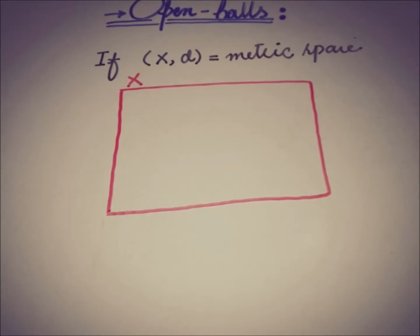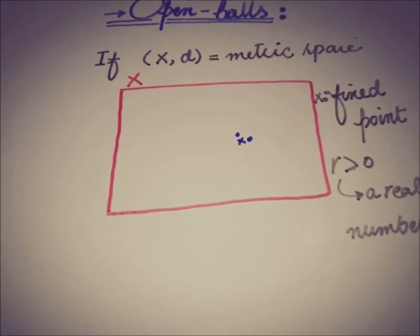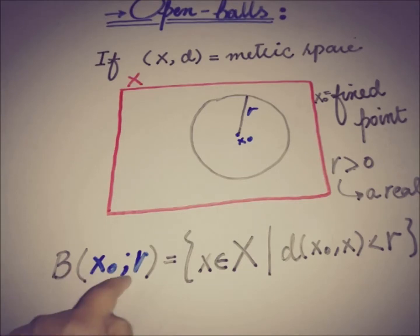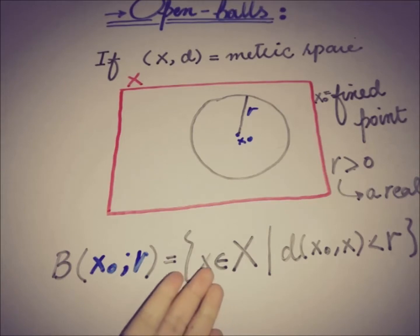where X is a space and D is a metric defined in that space, and we have a point in that space X — let's call that point X naught — and a real number R greater than zero, then we can define the open ball as a set B defined on X naught and R.